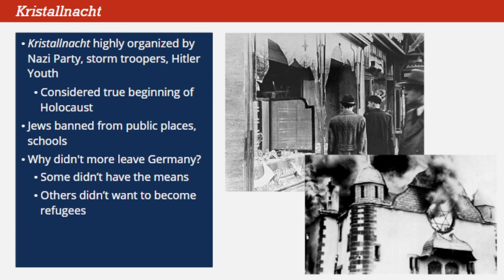They certainly knew that it was humiliating at best, dangerous at worst, to live in Hitler's Third Reich, but most believed that the storm would pass and that better days lay ahead. As terrible as Hitler was, few imagined in 1938 that his eventual plans would actually include the systematic murder of eleven million people. Even today, learning about the Holocaust in retrospect, it's hard to believe that it actually occurred. Think about how impossible it must have seemed before it occurred, when there was no precedent for this kind of state-sponsored evil.